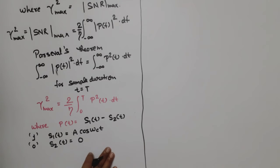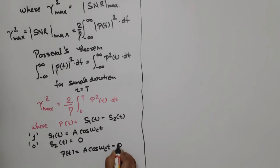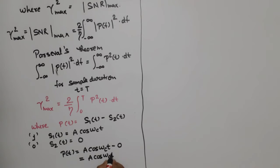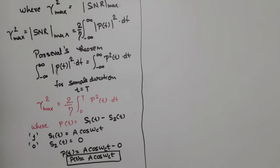So now, from this equation, what is the value of P(t)? P(t) will be equal to A·cos(ωct) minus 0, which is equal to A·cos(ωct). This is the value of P(t). We have found the P(t) value, and now we will substitute this into the gamma-max equation.